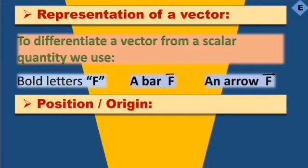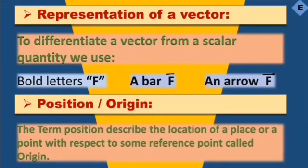The next one is position. What is position? The term position describes the location of a place or a point with respect to some reference point called origin. For example, you will go to school from home. School is your position. Home is the reference point.